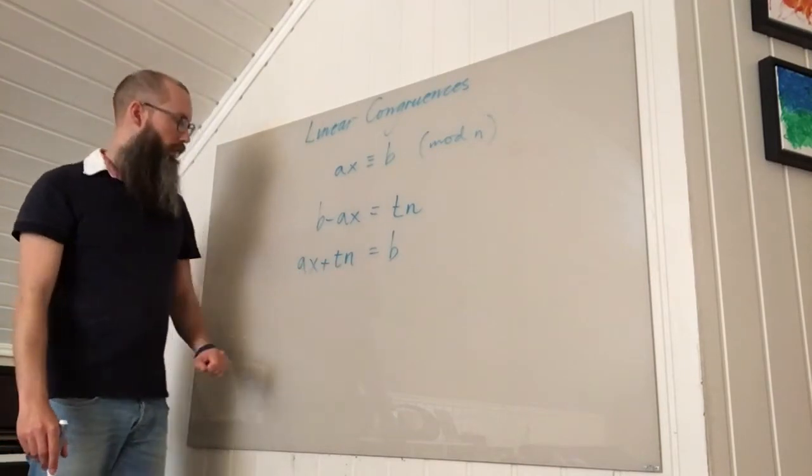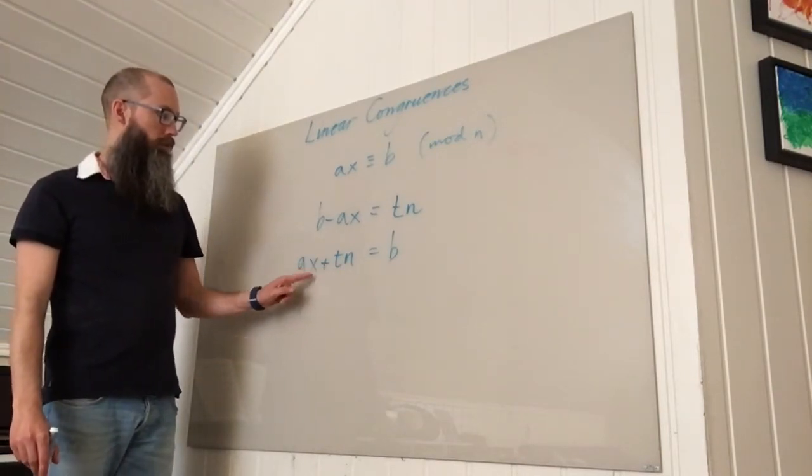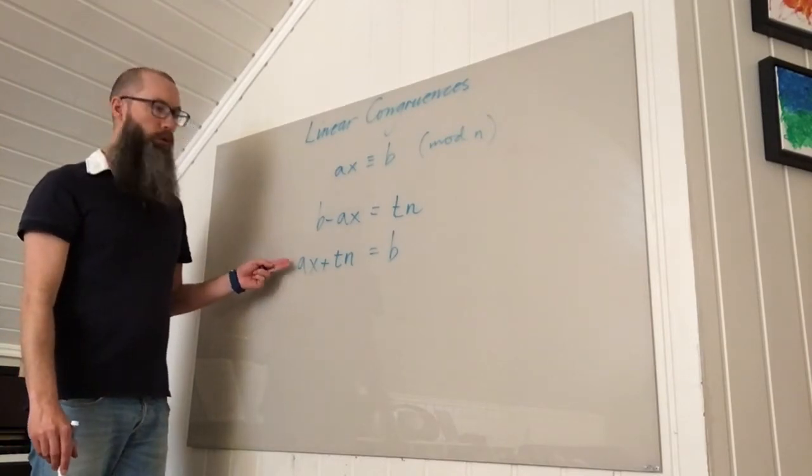So I want all of these x. Now a, n, and b are given, so the only unknown variables are x and t.